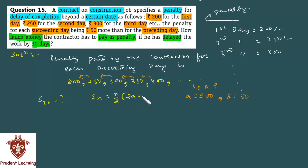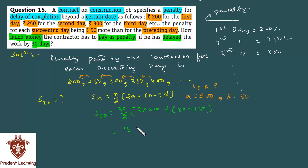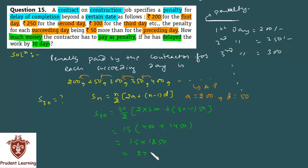Therefore, sum of 30 terms = 30/2 × [2(200) + (30−1) × 50] = 15 × [400 + 29 × 50] = 15 × [400 + 1450] = 15 × 1850 = 27,750.